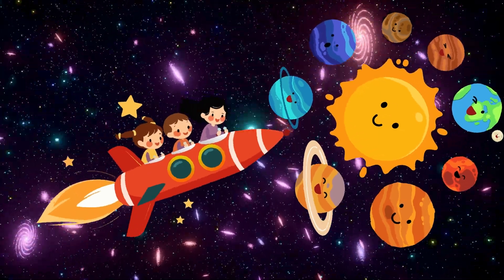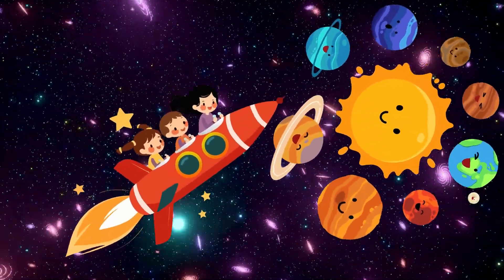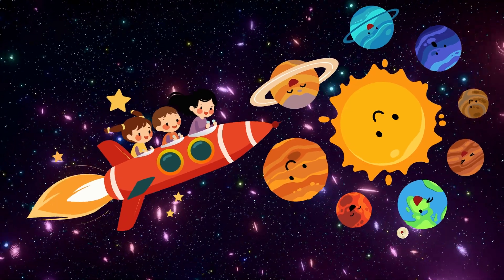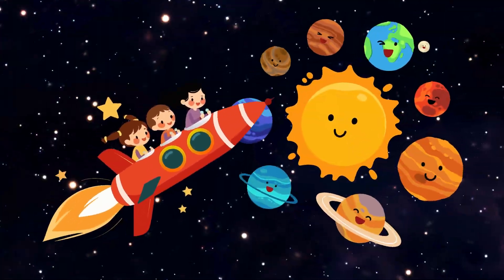Let's fly through space, come take a look. Eight planets spinning round just like a book. Mercury to Neptune dancing in a line, sing the planet boogie, it's spacey fine.